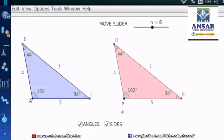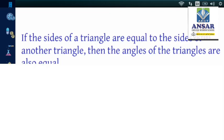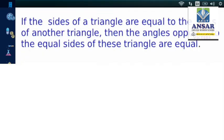If the sides of a triangle are equal to the sides of another triangle, then the angles of the triangles are also equal. Please note it down in your notebook. Also we can conclude that if the sides of a triangle are equal to the sides of another triangle, then the angles opposite to the equal sides of these triangles are equal. If you have any doubt, just look at the previous example and note it down in your notebook.